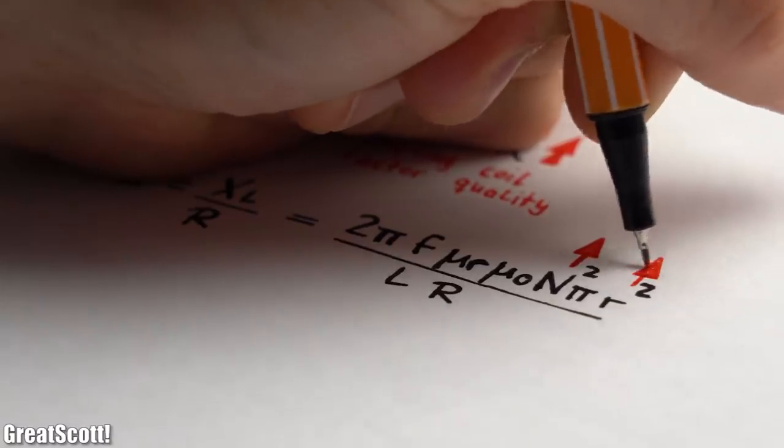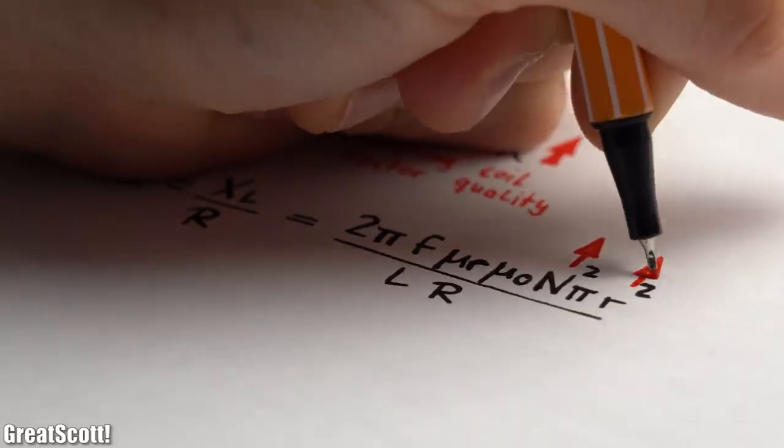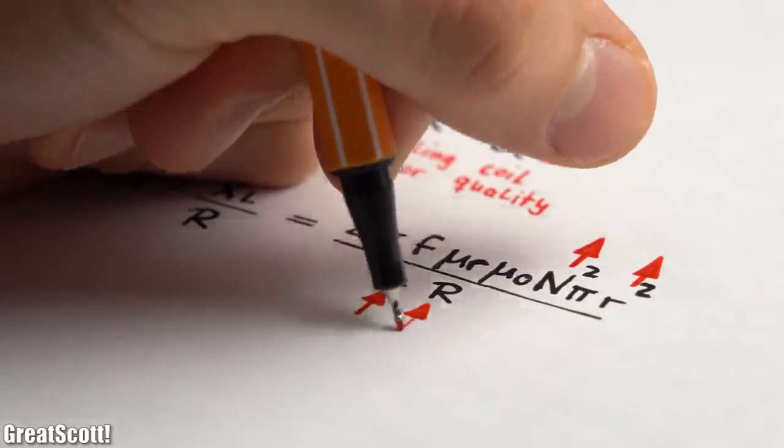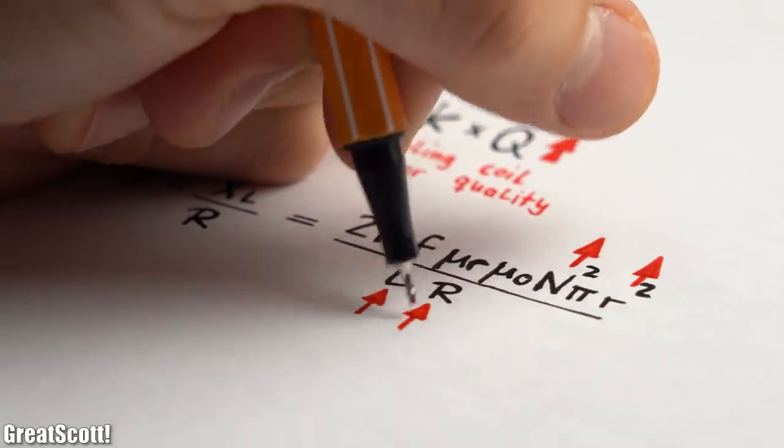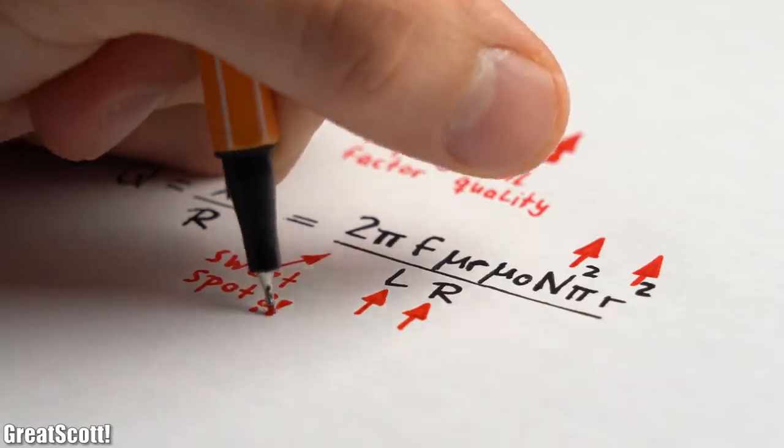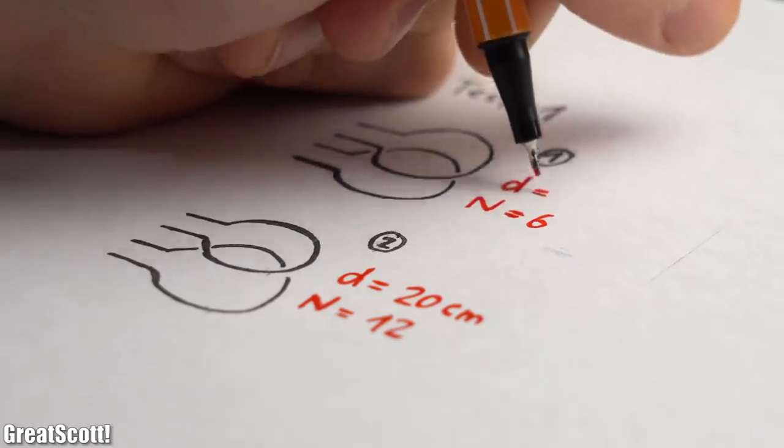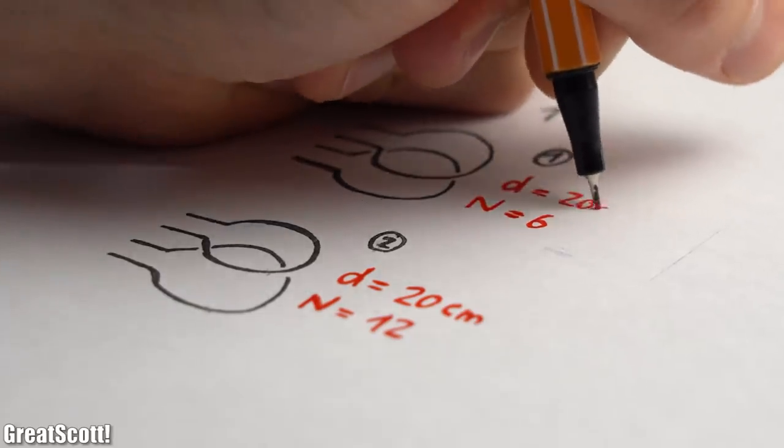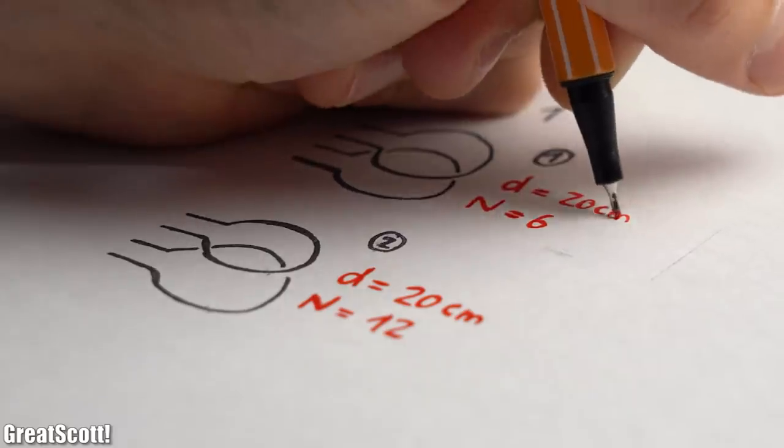But of course we cannot simply increase those values indefinitely, because then there will be a bigger length of the coil and higher resistance, which would decrease the Q factor. So there is a sweet spot we have to find, but for my first test I simply went with two coil pairs with a diameter of 20cm and a winding number of 6 and 12.